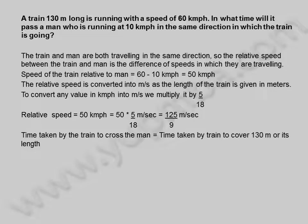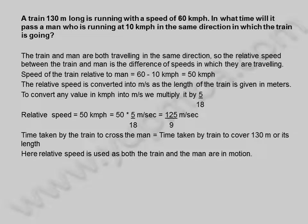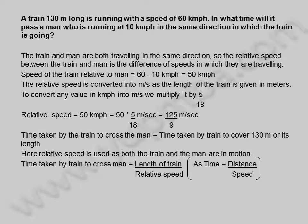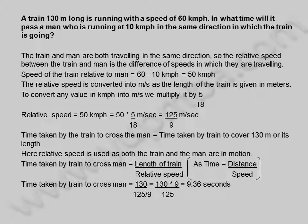Time taken by the train to cross the man is equal to the time taken by the train to cover 130 meters, or its length. Here relative speed is used as both the train and the man are in motion. Time taken by train to cross man is equal to length of train divided by relative speed, as time equals distance divided by speed. Time taken is 130 divided by 125/9, which equals 130 into 9 divided by 125, equal to 9.36 seconds. The time taken by the train to cross the man is 9.36 seconds.